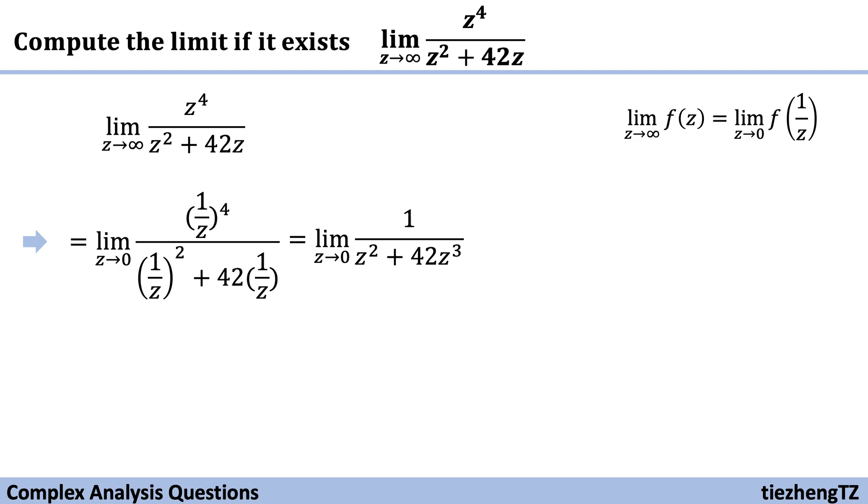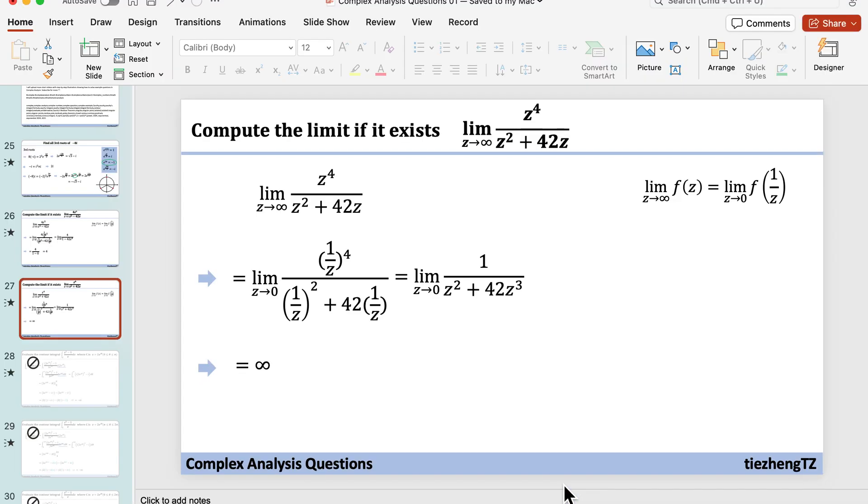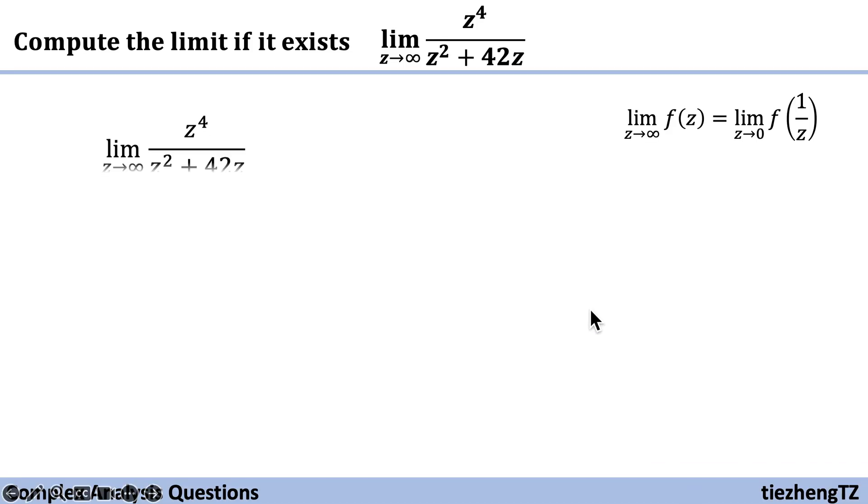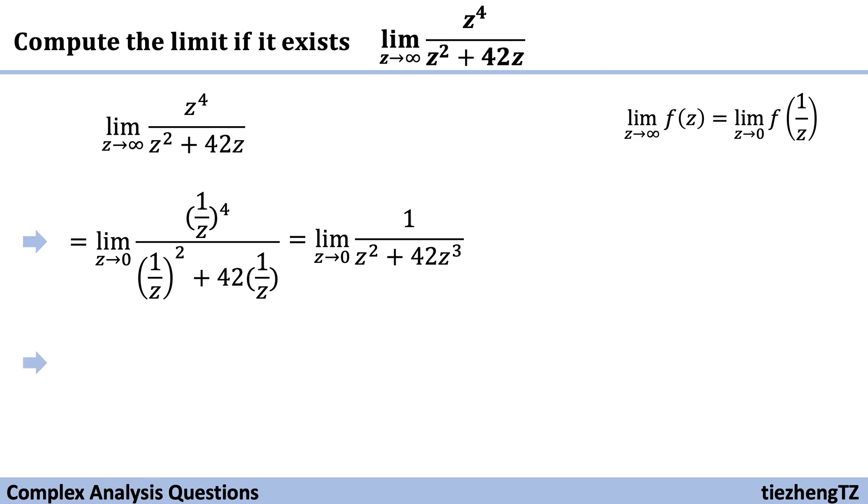As you can see, for the denominator part, when Z approaches zero it approaches zero, so this function becomes 1 over some value still approaching zero. Therefore, the limit exists, which is positive infinity.